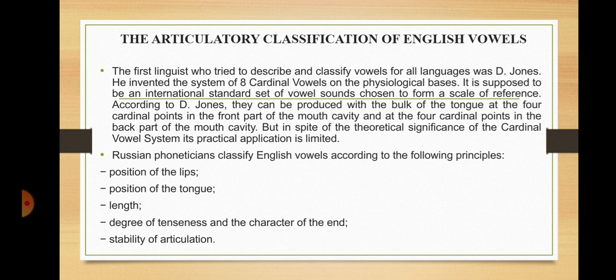Now we will speak in more detail about the articulatory classification of English vowels. The first linguist who tried to describe and classify vowels for all languages was Jones. He invented the system of eight cardinal vowels on a physiological basis, supposed to be an international standard set of vowel sounds chosen to form a scale of reference. According to Jones, they can be produced with the bulk of the tongue at four cardinal points in the front part and four in the back part of the mouth cavity. In spite of the theoretical significance of the cardinal vowel system, its practical application is rather limited.